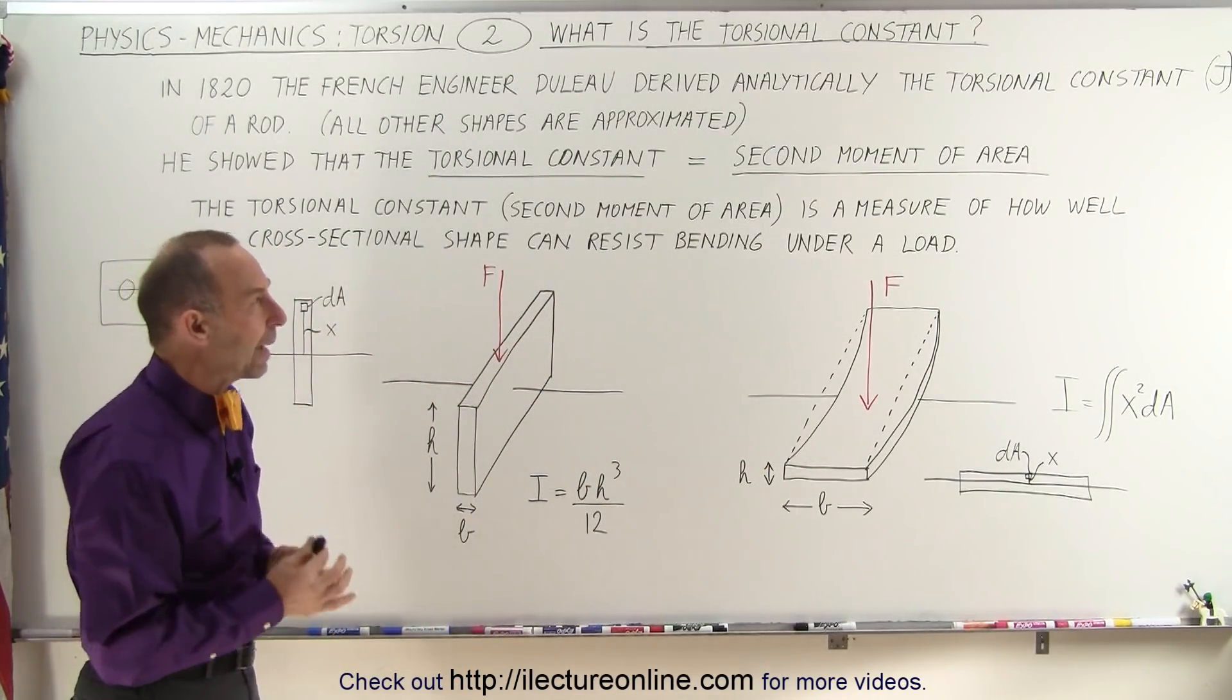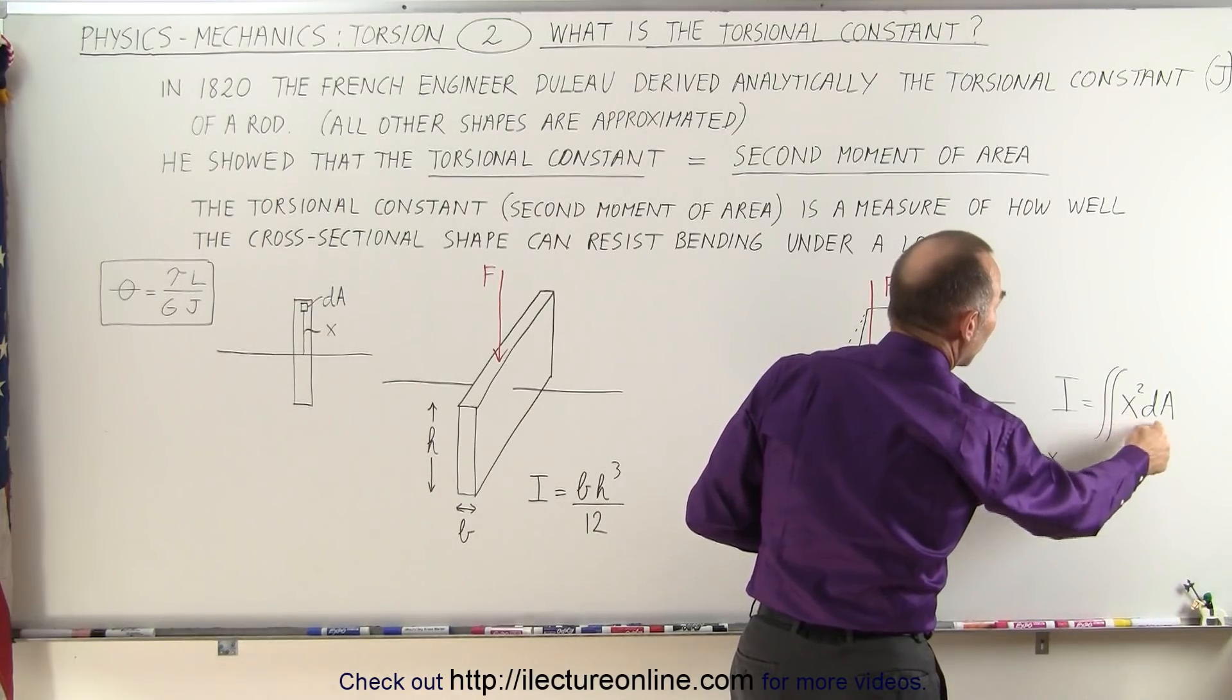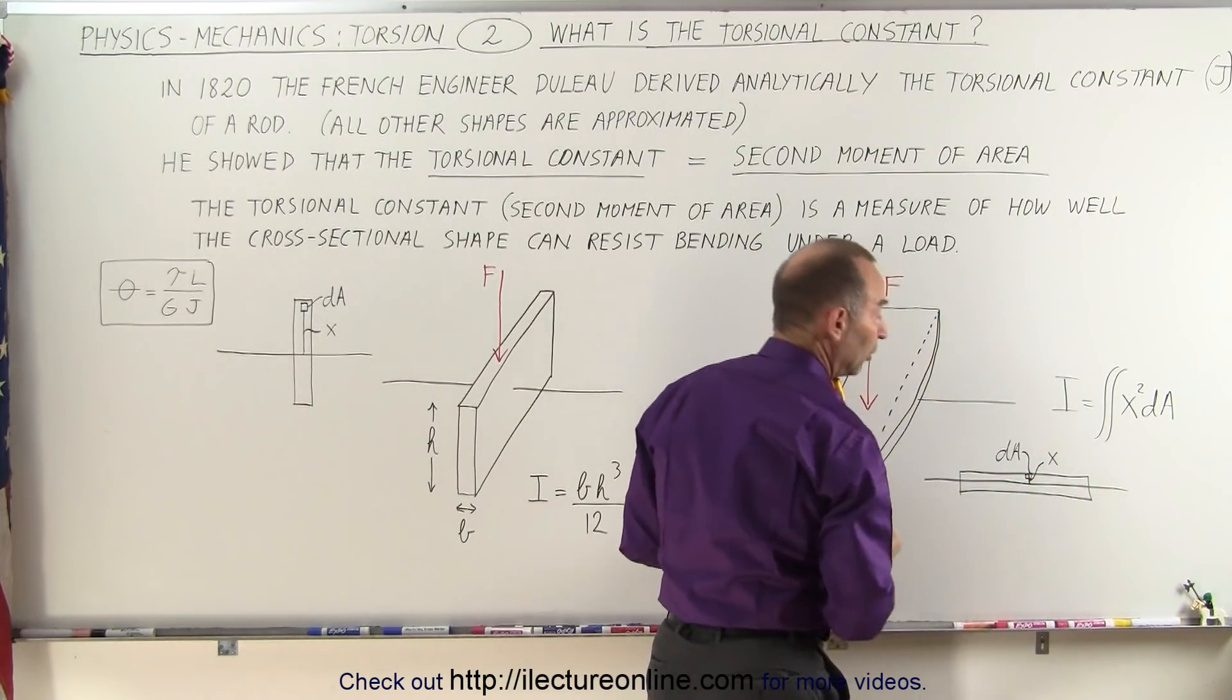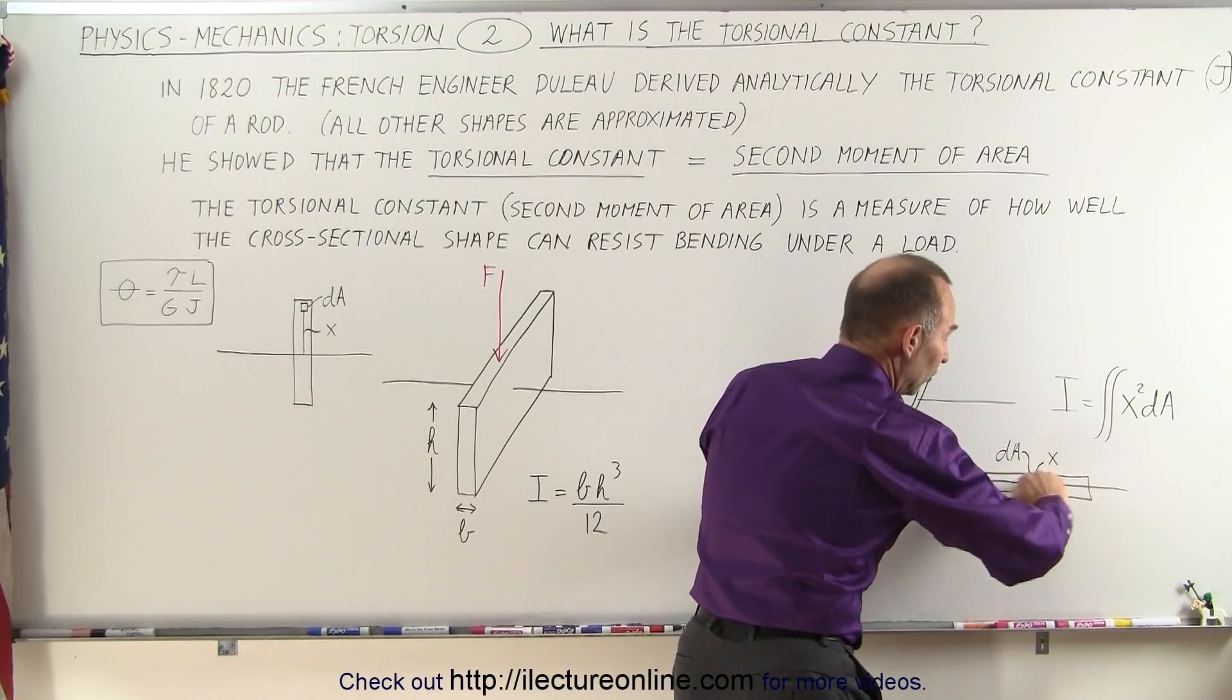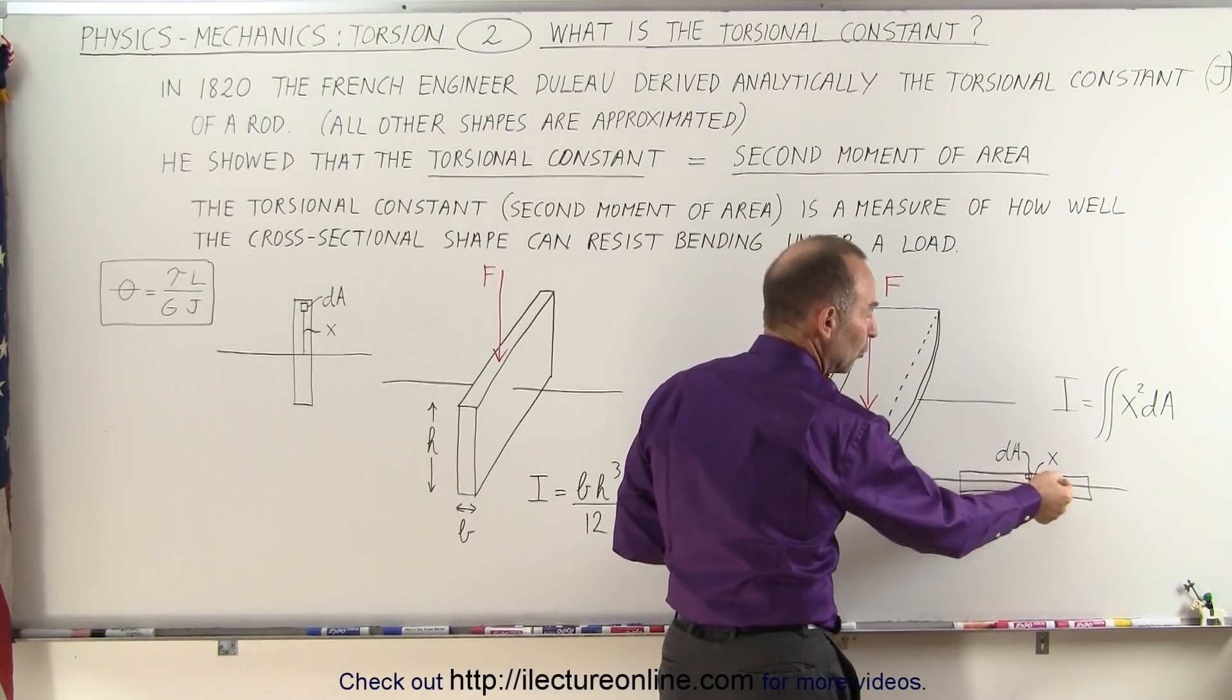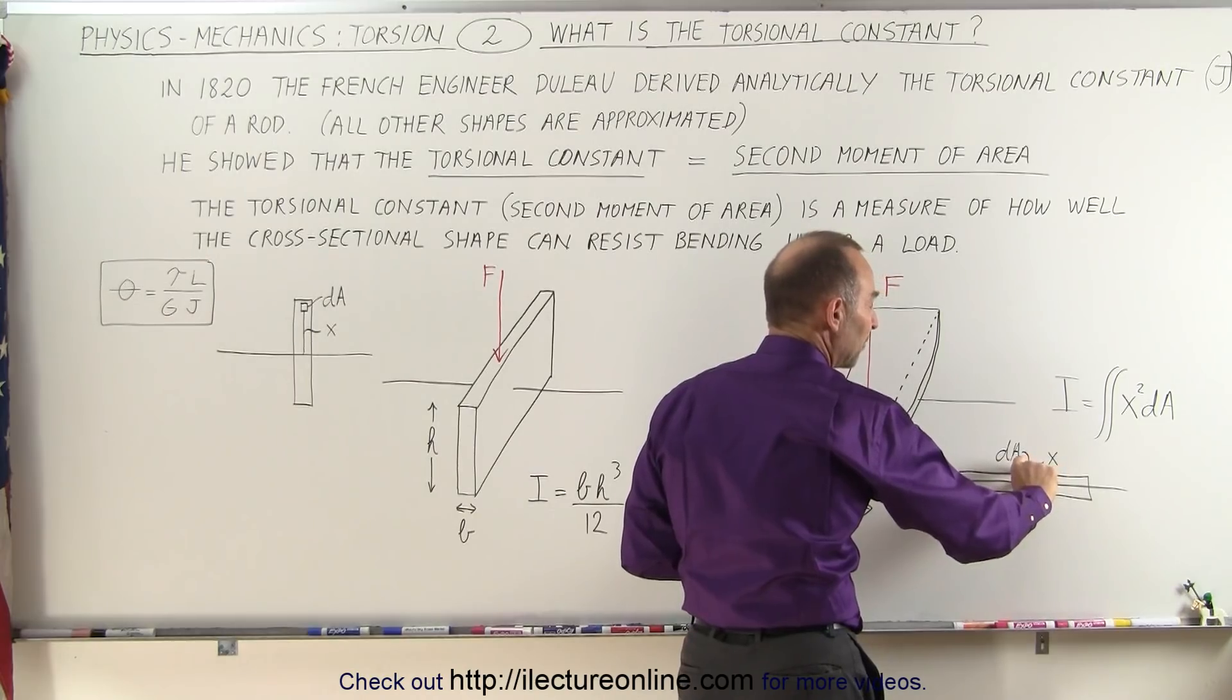Another way in which we can think about it is that the torsional constant is equal to the double integral of x squared dA. In other words, dA would be a small area element on the cross-sectional area of the board. X would be the distance from the point about which it can bend, so usually this goes right through the center of the cross-sectional area. You can see that no portion of the board is very far away from that central line right here. Therefore, x will always be very small.